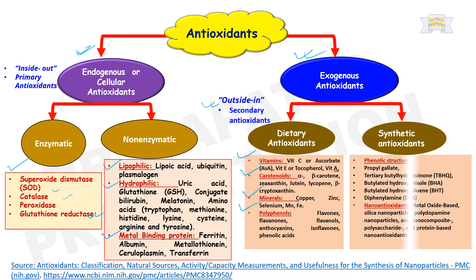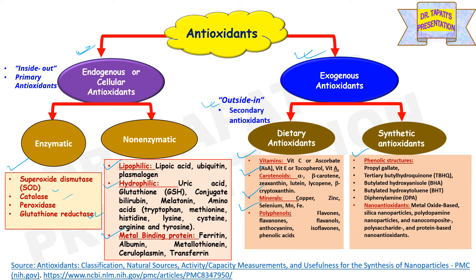Examples of synthetic antioxidants are phenolic structures like propyl gallate, tertiary butylhydroquinone or TBHQ, butylated hydroxyanisole or BHA, butylated hydroxytoluene or BHT, and diphenylamine or DPA. Nanoantioxidant examples are metal oxide-based silica nanoparticles, polydopamine nanoparticles, and nanocomposite polysaccharide and protein-based nanoantioxidants.